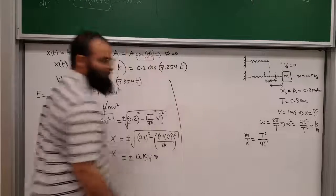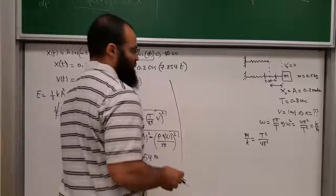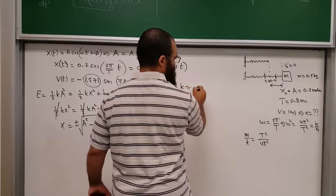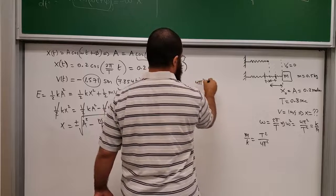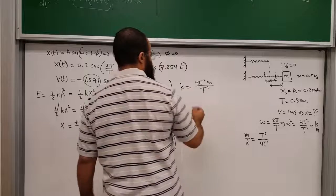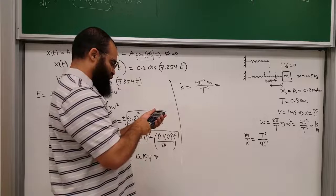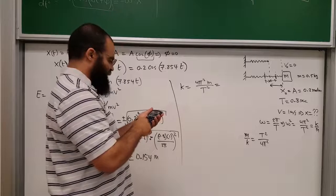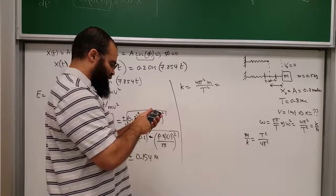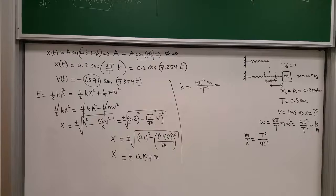They also want the force constant of the spring. Using ω² = k/m, we get k = 4π²m/T². Plugging in: k = 4π² × 0.5 / (0.8)² = 4 × (3.14159)² × 0.5 / 0.64 ≈ 30.8 N/m.